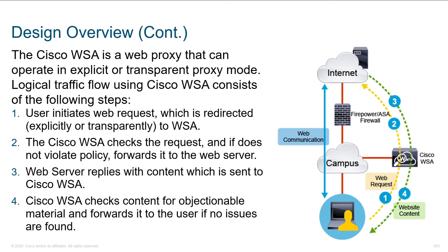The user is responsible for initiating the web request, which gets passed to the WSA — either explicitly or transparently. The WSA checks the request, and if it doesn't violate policy, it forwards it to the web server. The web server replies with content, which gets passed back to the WSA. The WSA sanitizes the content, makes sure everything is okay, and then pushes it back down to the user.